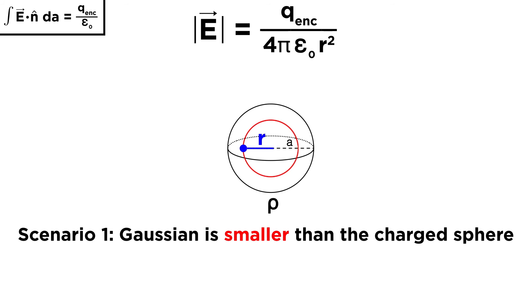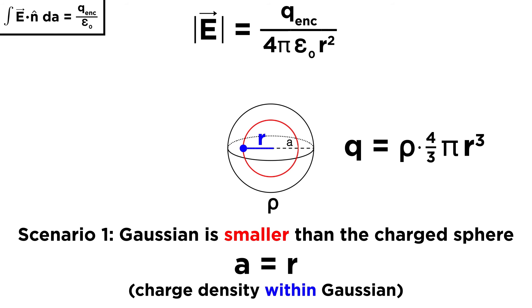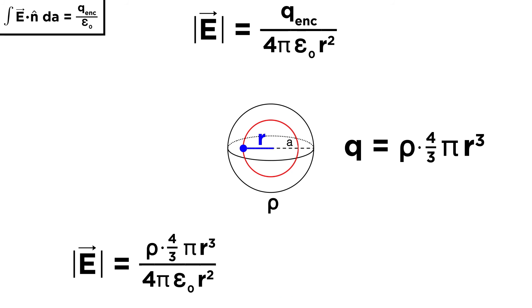For the first scenario, if it is smaller than the charged sphere, meaning r is less than a, then we can actually say that a equals r, because we will only be considering the charge density within the Gaussian. This means that q equals rho times the volume of the Gaussian, or 4 thirds pi r cubed. We can plug this into our previous expression, and we will see that 4 will cancel, pi will cancel, and two of the r terms will cancel. The electric field would then simplify to this expression.